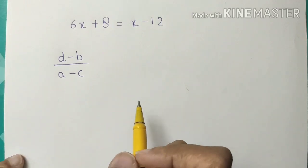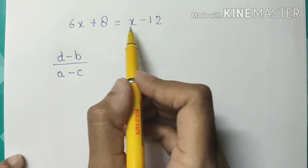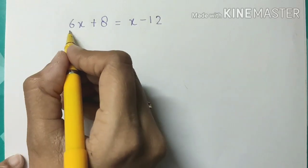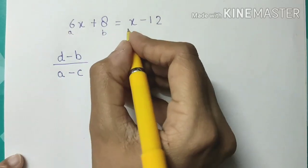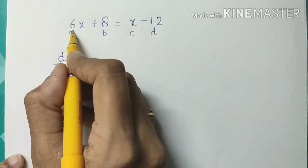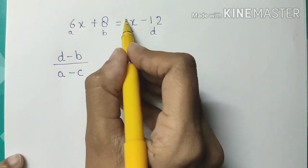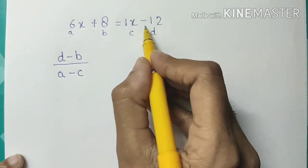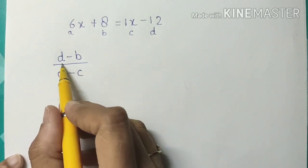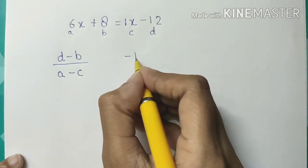Let's move on to our next example: 6x + 8 = x minus 12. You all know what to do — mark A, B, C, and D. A is 6, B is 8, C is 1, and D is minus 12. Now put all the values into the formula (D minus B) upon (A minus C). D is minus 12.